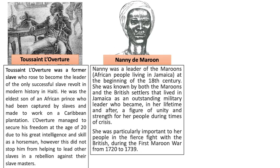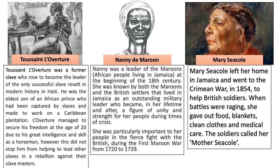Then we have Mary Seacole. Mary Seacole left her home in Jamaica and went to the Crimean War in 1854, much the same as Florence Nightingale — an incredibly famous and prominent person in the medical history of Britain. She went there to help British soldiers. When battles were raging, she gave out food, blankets, clean clothes, and medical care, and the soldiers called her Mother Seacole. Even though she was rejected racially by Britain and advised not to go, she travelled there because she thought it was her responsibility to go and support British soldiers. So what we can see is three incredibly iconic and important members of Caribbean history who Agard highlights as representative of his own identity and culture throughout the poem.